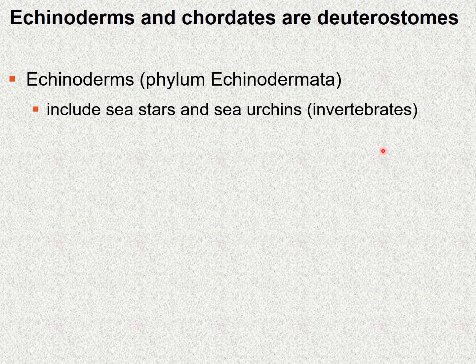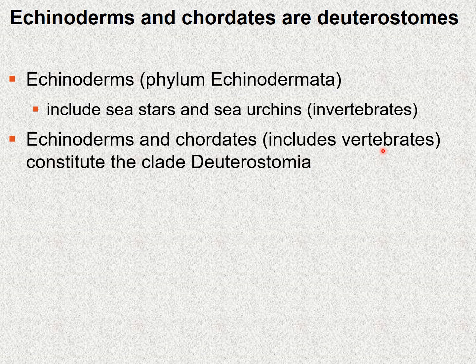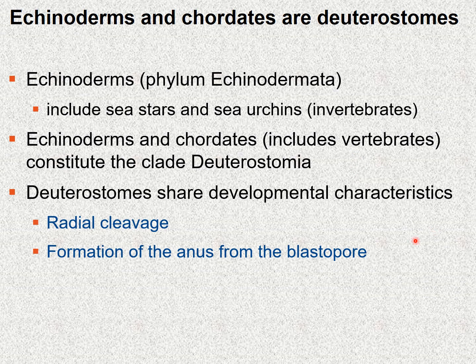The phylum is echinodermata, which includes the sea stars, sea urchins, and other organisms — and again, these are invertebrates with no vertebrae. The echinoderms and the chordates constitute the major clade of animals that are deuterostomes. Deuterostomes share several developmental characteristics: one is radial cleavage, where during early development the stages of rapid cleavage occur in a radial format, and the second is that the blastopore becomes the anus of the organism, as opposed to protostomes.